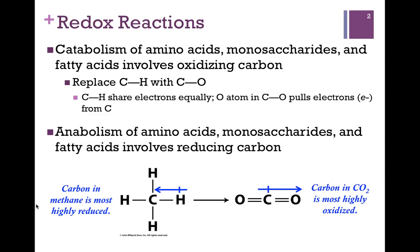If you look at the bottom of the screen, on the left we have the most reduced form of carbon — methane — with all C-H bonds. The bond between carbon and hydrogen in methane shares electrons fairly equally, though we might imagine the electrons being pulled more towards the carbon atom. In the most oxidized form of carbon, CO2, on the right, we have electron-withdrawing oxygen atoms tugging the electrons in their direction. So the electrons are being removed from carbon — that makes it an oxidation. In other words, carbon has lost electron density.